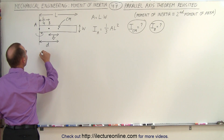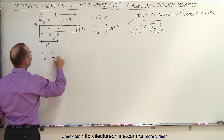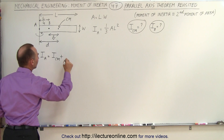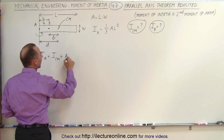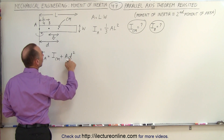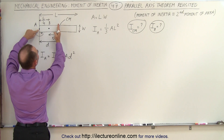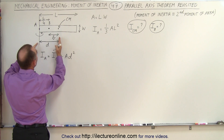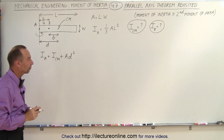Starting out, we can say that the moment of inertia at A is equal to the moment of inertia at the center of mass plus the area — because we don't have a mass — times D squared, where D represents the distance from A to the center of mass, which in this case is L over 2, half the length.